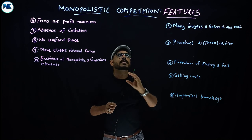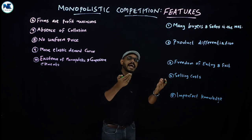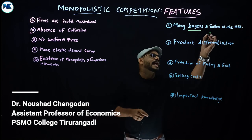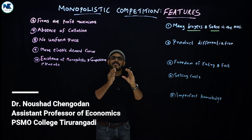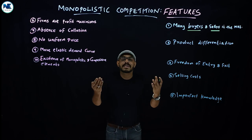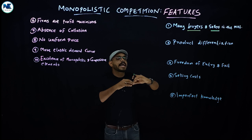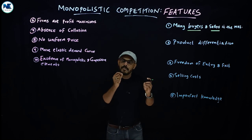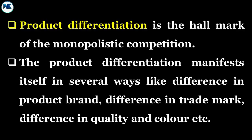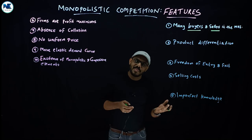The first feature is the existence of a large number of sellers and buyers in monopolistic competition. In simple terms, there are many buyers and sellers in the market. Each seller has a small market share, so sellers have some degree of discretion over their output and price — some form of monopoly power exists due to product differentiation. However, because there are a large number of sellers, control over price and output is limited.